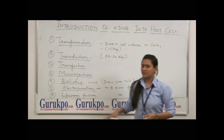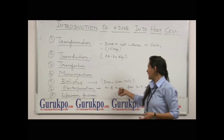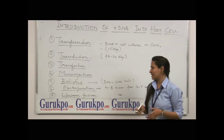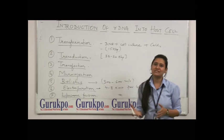Sixth is Electroporation. In electroporation, electricity is provided that is around 4 to 8 kilovolt for 4 to 5 seconds. And in this, small holes are created into the cell so that DNA can be easily inserted.